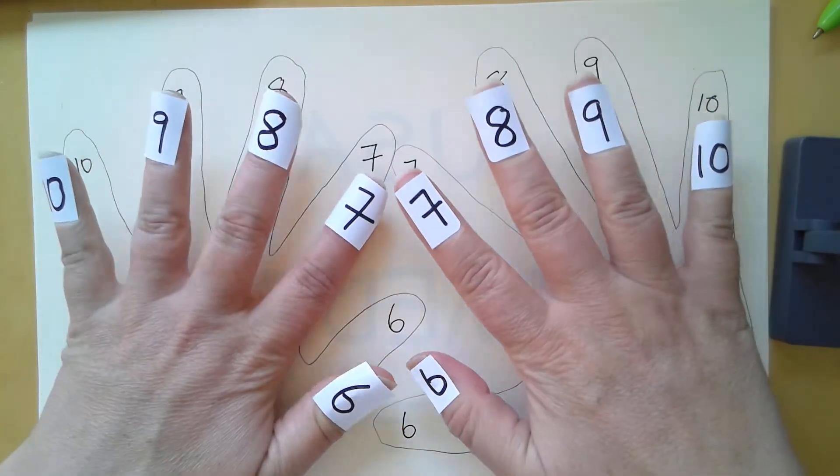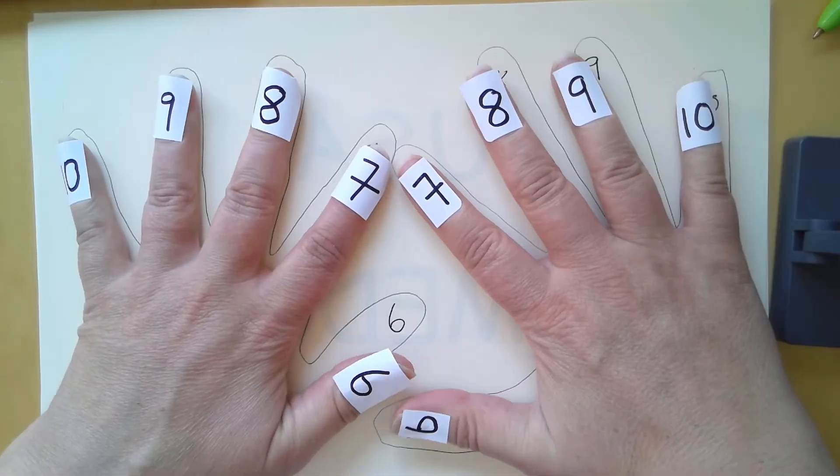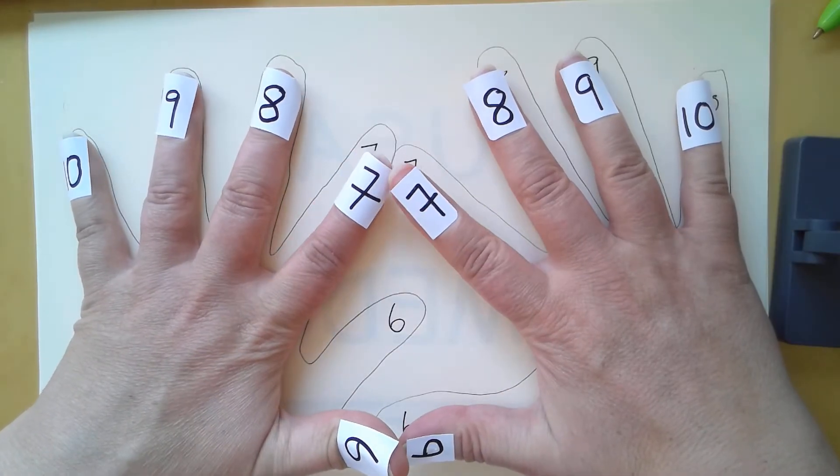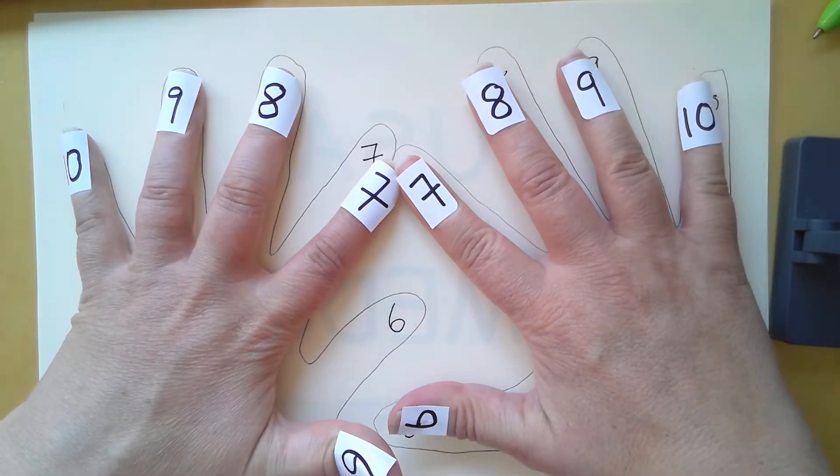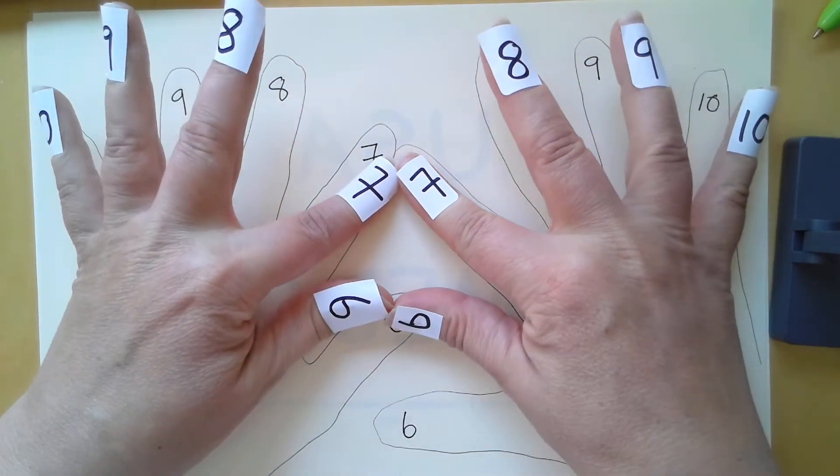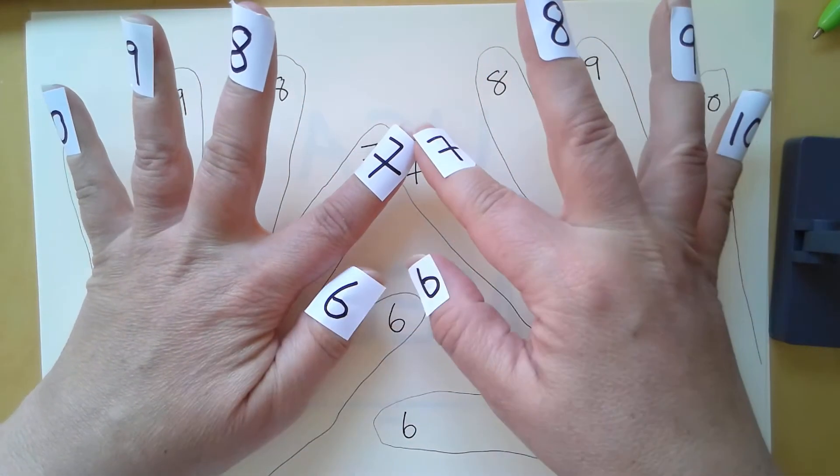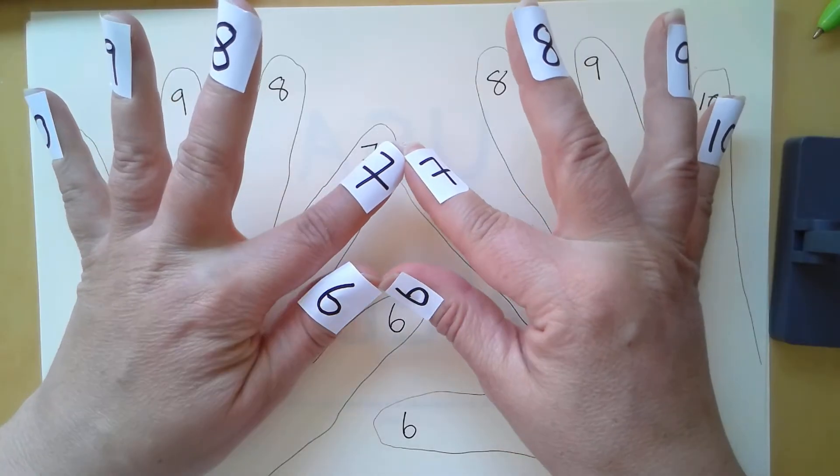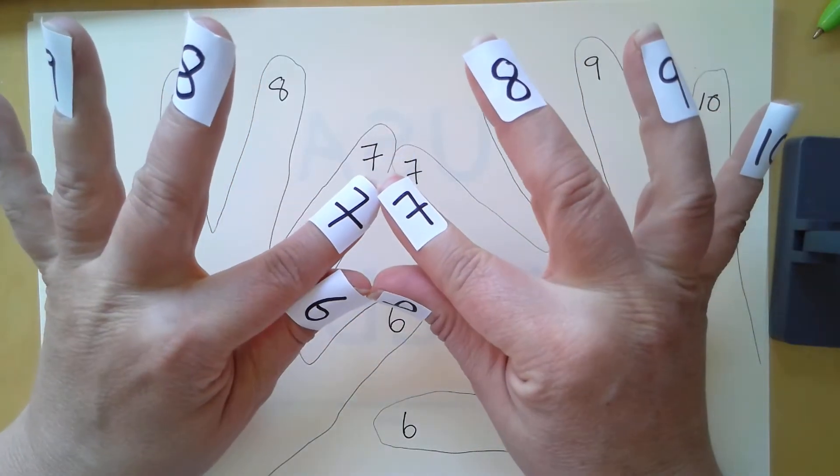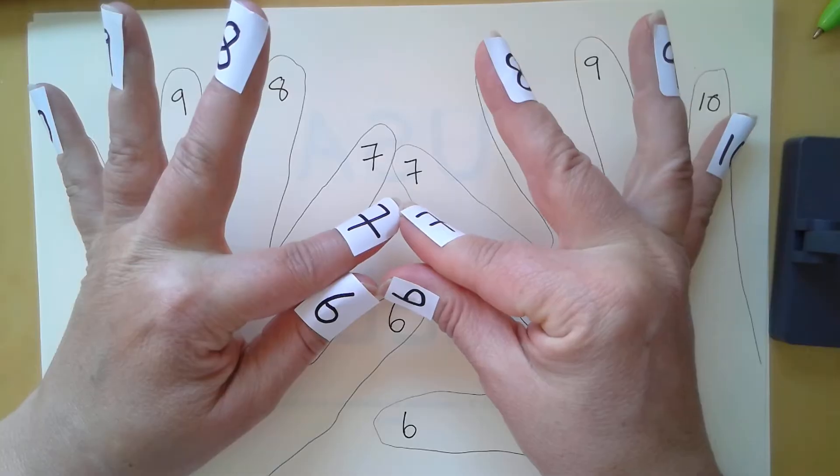Looking at my hands, if you take your seven and your seven fingers and put them together, then you count the number of fingers that are touching and the number of fingers that are below. Add together the number of fingers that are touching and the fingers that are below.